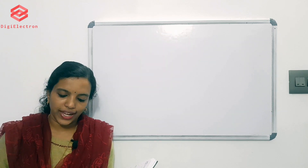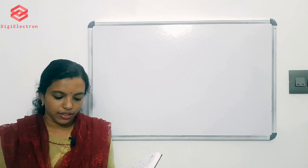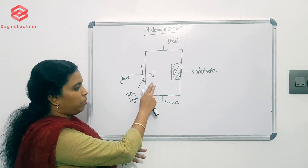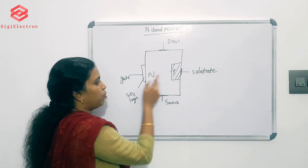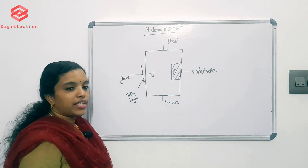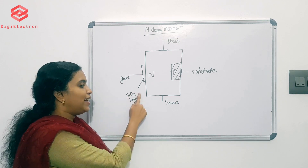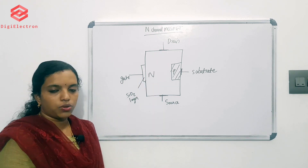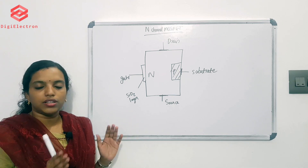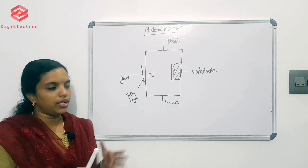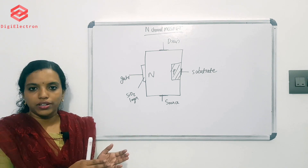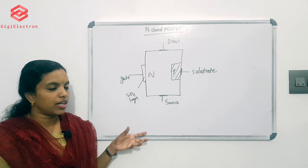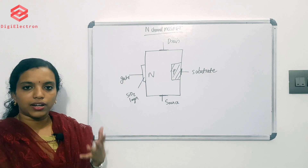Next: describe the construction of N-channel depletion type MOSFET. In N-channel depletion type MOSFET, we have a P-type substrate. We have a gate terminal, and every MOSFET gate is insulated with a thin layer of silicon dioxide. We also have source and drain terminals. This is the construction of the N-channel depletion MOSFET.